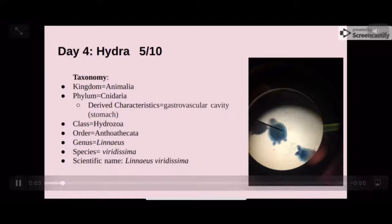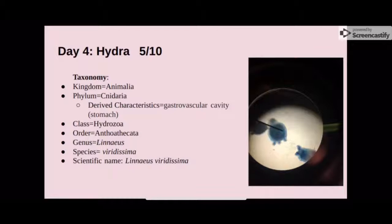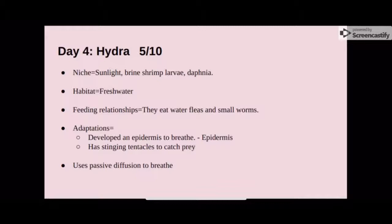The next organism we looked at was the hydra. Its derived characteristic is a gastrovascular cavity, and its scientific name is Hydra vulgaris. Under the microscope, we can see the hydra's outermost layer, the epidermis, which is used for breathing. The niche of the hydra is sunlight and brine shrimp, larva, and daphnia. Its habitat is freshwater. Its feeding relationship is that it eats water fleas and small worms. Adaptations include the epidermis for breathing, stinging tentacles to easily catch prey, and passive diffusion to perform respiratory functions.